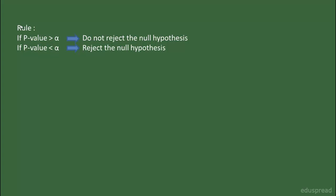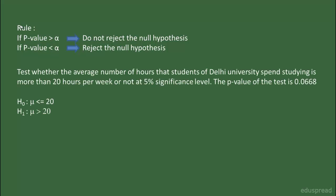Now let me show you how easy it is to interpret the results while working with P-values. Suppose we have to test whether the average number of hours that students of Delhi University spend studying is more than 20 hours per week or not. The level of significance is 5% and the P-value is 0.0668. We have two claims: μ ≤ 20 (null hypothesis) and μ > 20 (alternative hypothesis). Since the P-value of 0.0668 is greater than alpha of 0.05, we do not reject the null hypothesis. See, it is that simple to work with P-values.